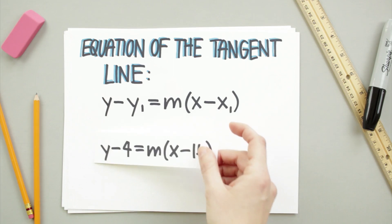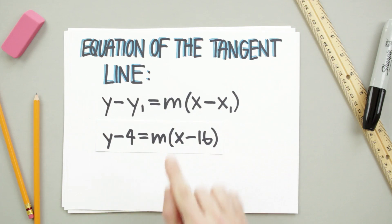Using the point 16, 4, we have that y minus 4 is equal to the slope of the line multiplied by x minus 16. The one thing we're missing in this equation is the slope of the line.